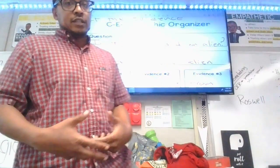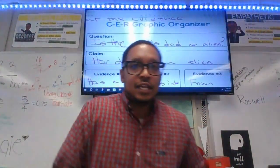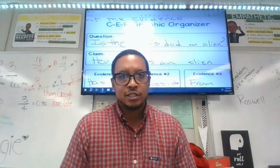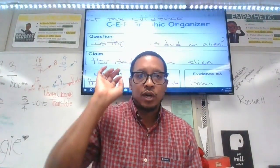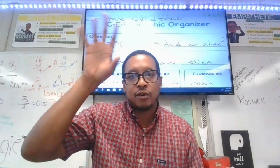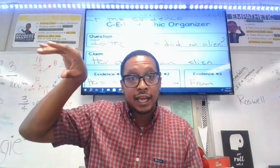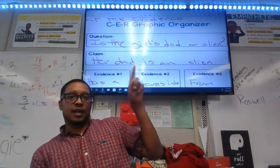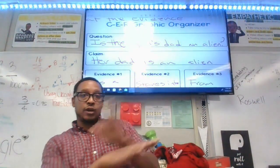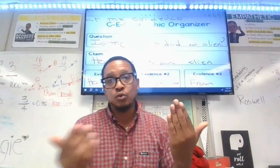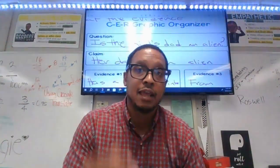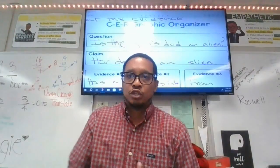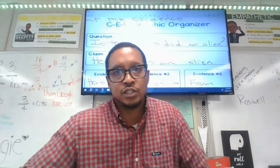You've got to think about it in the ways of science. Every time scientists look at data, they look at information — they're not always going to come to the same conclusion. So the question is: is the girl's dad an alien? And then the claim is either her dad is an alien or her dad is not an alien. The claim has to answer the question.